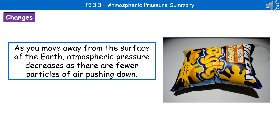And next time you get on a plane, it's always a fun thing to do: buy a packet of crisps in the airport and don't open them. So if you have that packet of crisps in front of you as the plane is ascending, then what you're going to see is as the pressure decreases, the packet of crisps just swells up, because we've got a greater pressure pushing out than we do have in the air around us. So try that next time you go on holiday.